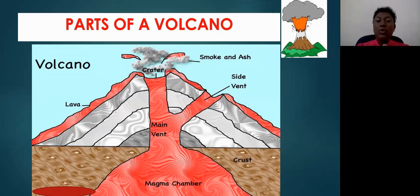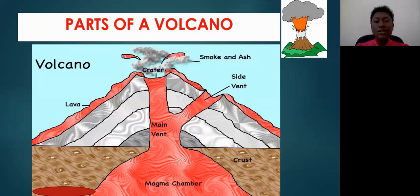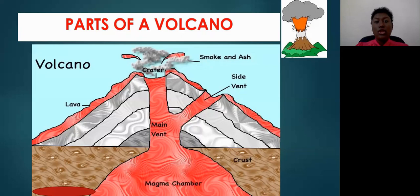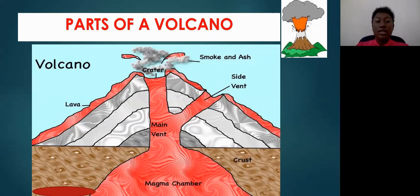From the magma chamber, you have a main opening that goes through the center of the volcano. This opening is called the main vent, or it can be called the central vent. Think of it like your esophagus leading to your stomach — your stomach is similar to the magma chamber, and the main vent leads from the magma chamber up through the center of the volcano.